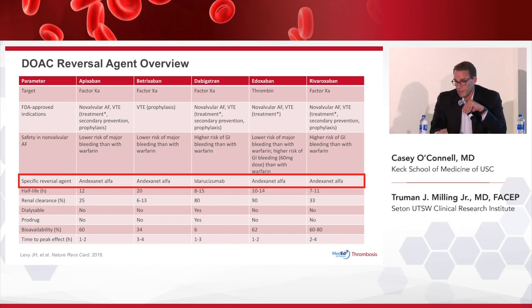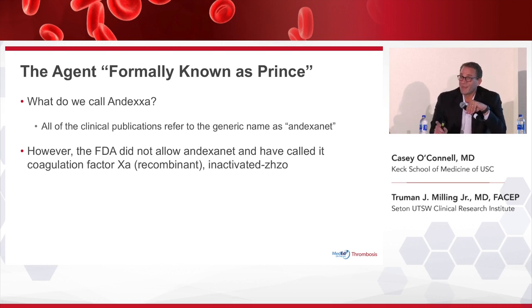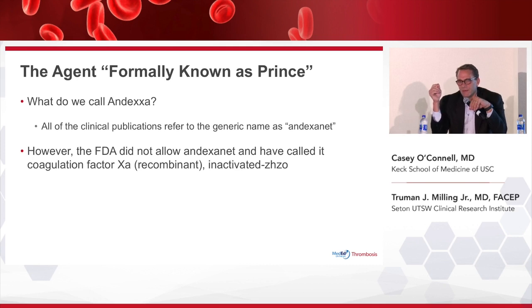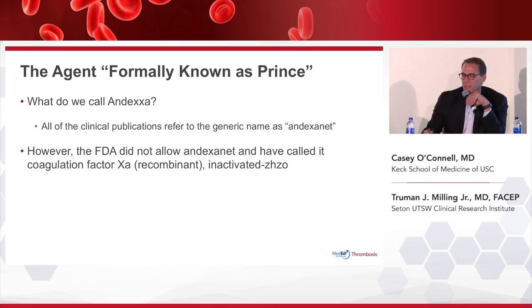Looking at drug classes and their specific reversal agents: for the Xa class — betrixaban, apixaban, edoxaban, rivaroxaban — andexanet alfa is the specific agent. For dabigatran, it's idarucizumab or Praxbind. The agent formerly known as Andexxa — the FDA was strict about naming — is officially called recombinant inactivated factor Xa, which is correct but doesn't roll off the tongue. We'll probably still call it andexanet or Andexxa in the literature, but the label will say inactivated, referring to andexanet.